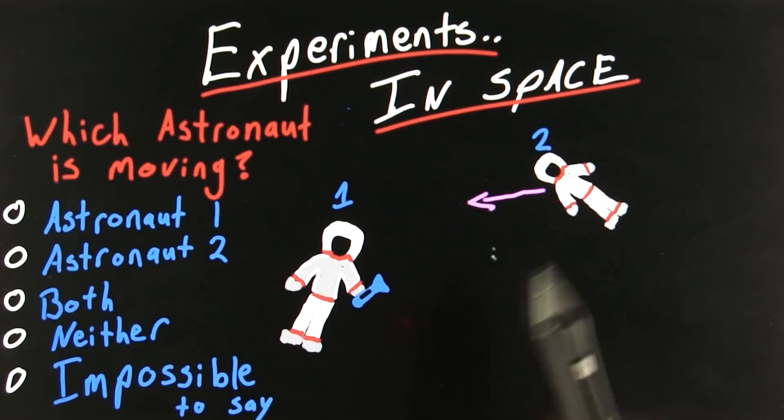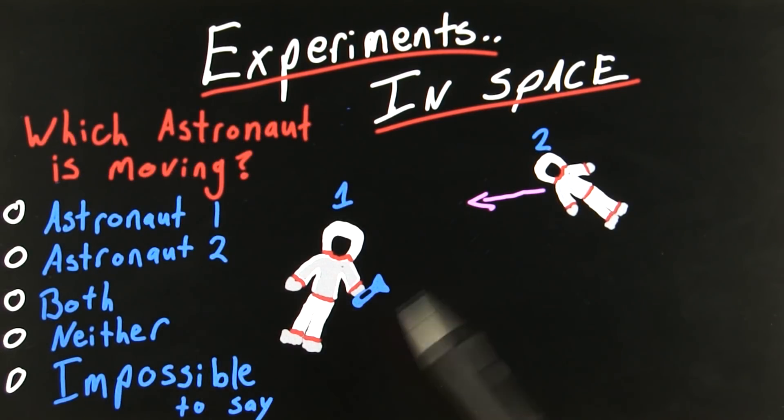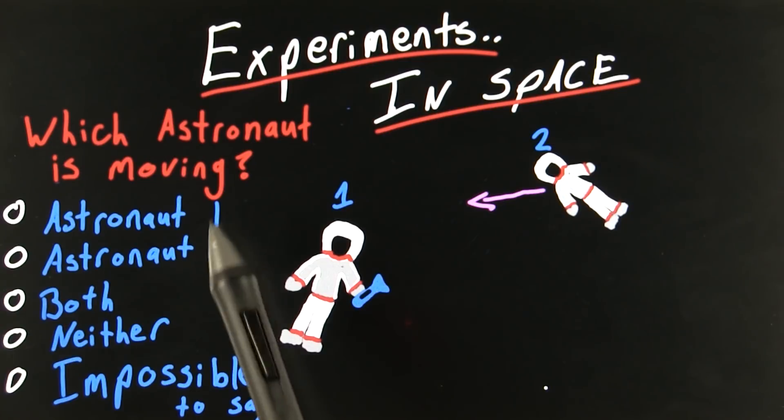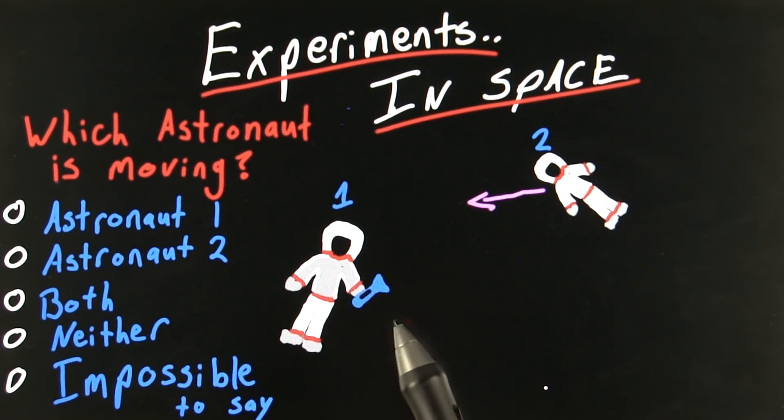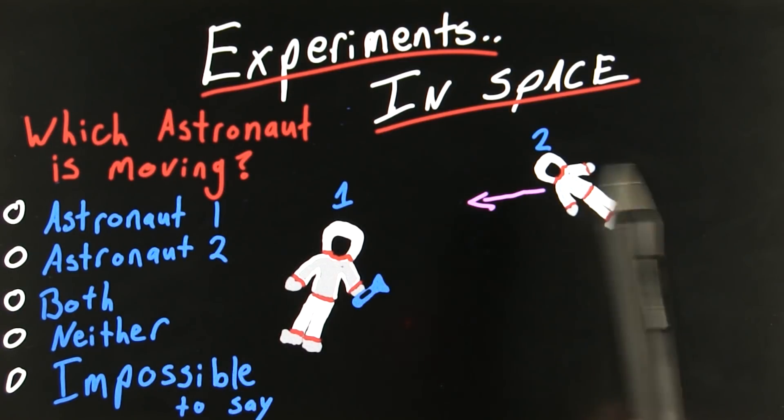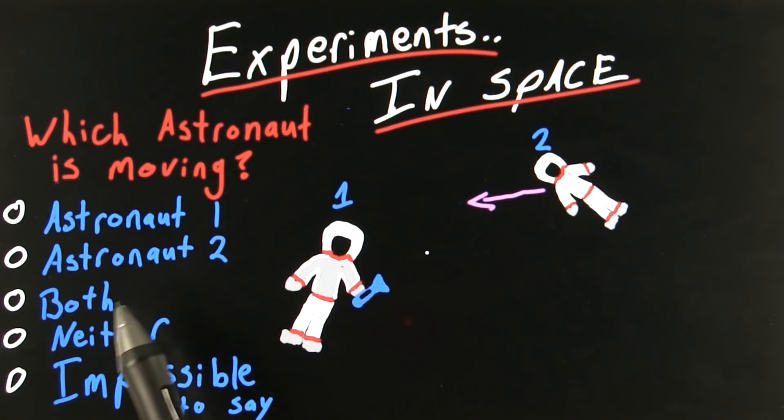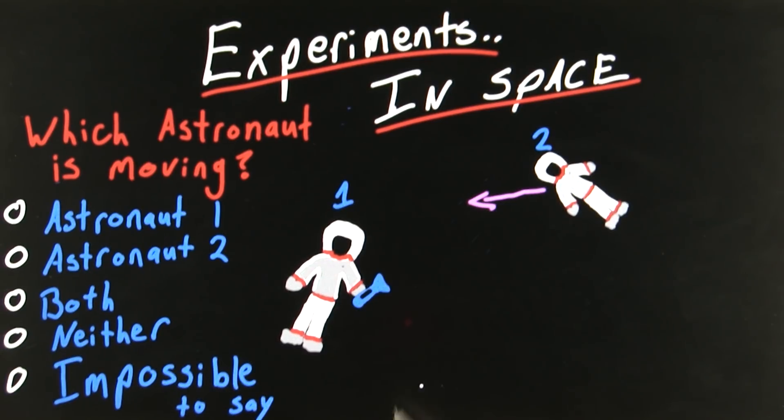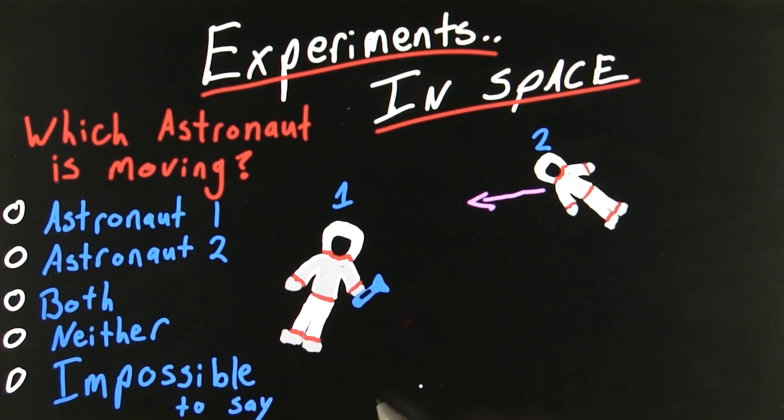So I want you to think about this question. Which of these two astronauts is moving? Is astronaut one the one who's truly moving? Is astronaut two the one who's actually moving? Maybe they're both moving. Maybe neither of them is moving. Maybe they're both motionless. Or is it impossible to say? I want you to really think about this question. And don't worry if you get it wrong, because this is not a completely intuitive concept.